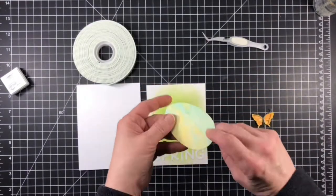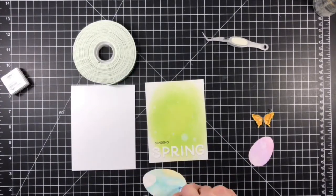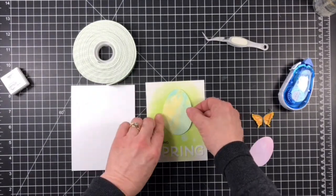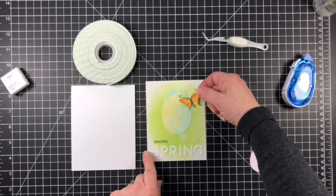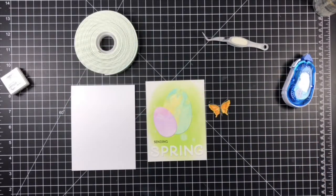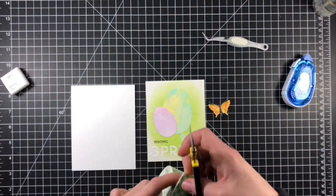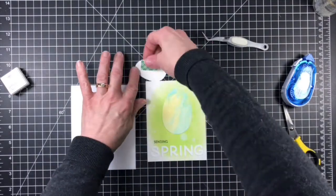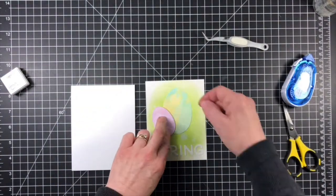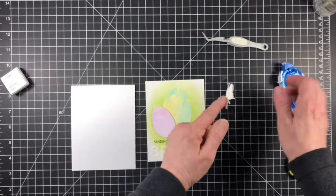I adhered the word spring along the bottom of my card front using liquid glue and inside my mini misti so that I could make sure it was centered and also to make sure that it was straight. Once the letters were glued down I stamped the word sending from the Lingo Thanks stamp set just above and to the left of the word spring.